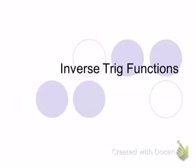Inverse trig functions is kind of the next step. We're used to using inverse trig functions to solve for an angle in a triangle. So if we're looking for an angle and we know the sides, then we can use the inverse trig function to find the angle. If we're using the law of cosines or the law of sines and it's the angle we're looking for, then we use the inverse trig functions to kind of unwrap it. And we're going to use inverse trig functions to undo trig functions, but there are some exceptions to the rule, and we'll talk about that toward the end of the lesson.